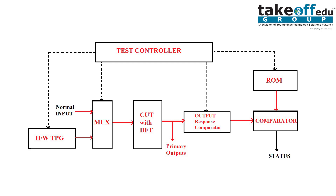At the output, all operations are done in the CUT, whatever the design may be. You'll get some output, and that output is given to another mux, from which you get an output response. You can see a compactor here — this compactor may be a time compactor or a space compactor. We have different techniques for time compaction and space compaction, which we'll discuss after the architecture. After that, you'll have a comparator, which compares the output response with the stored values in the ROM.